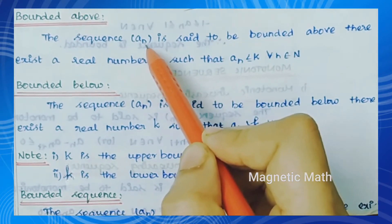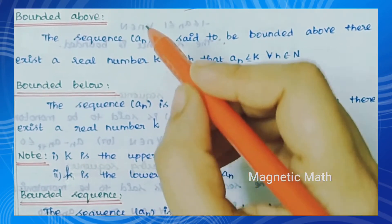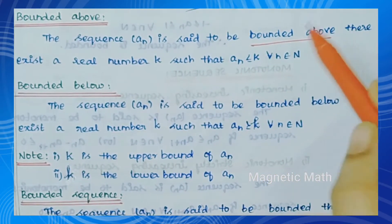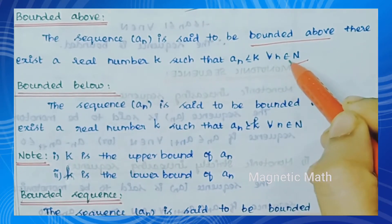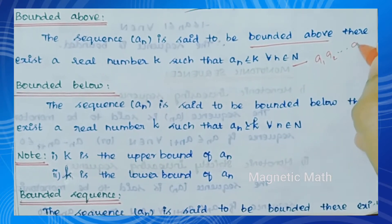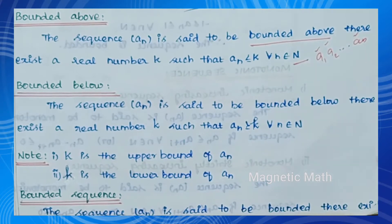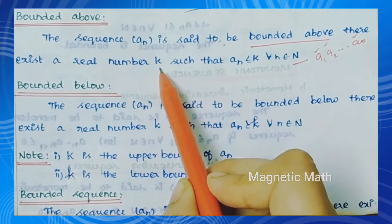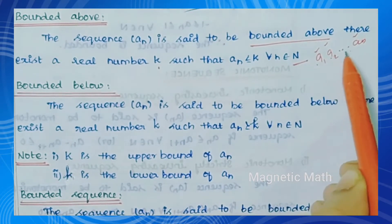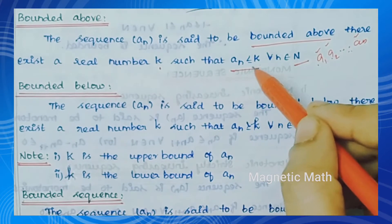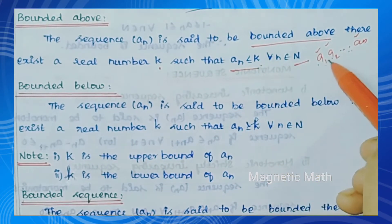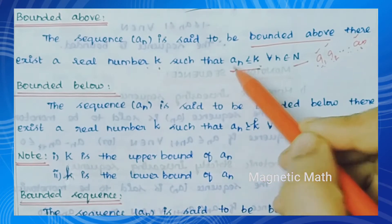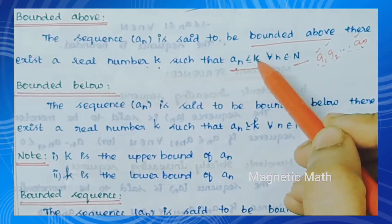That is, aₙ is the sequence: a1, a2, and so on. The sequence is bounded above for all n belonging to ℕ. So a1, a2, and so on — all terms of the sequence aₙ are less than or equal to K. K is one real number. So K is a real number, then the sequence is bounded above.